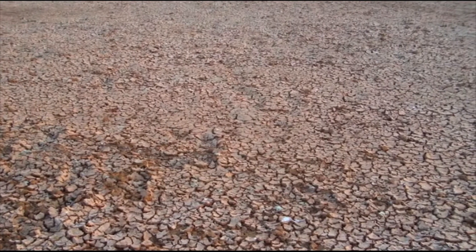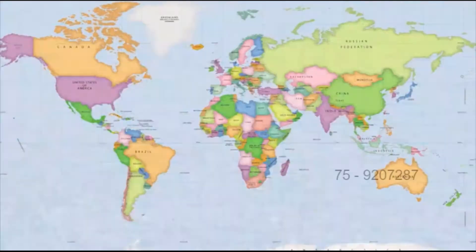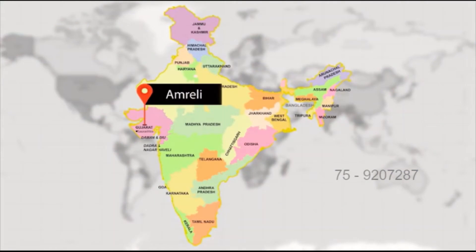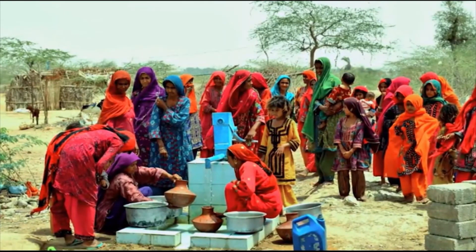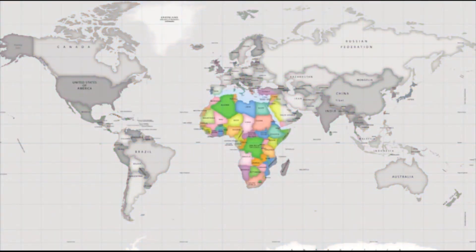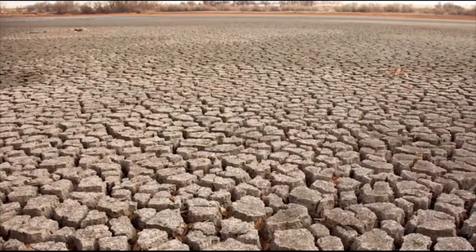In some areas of the world there is such an acute shortage of water that people have to buy water to survive. For example, Amrelly city in Saurashtra, India, actually has a water market where people buy water from neighboring villages. Most of Africa suffers from water shortage. Other areas include West and South Asia, parts of western USA, northwest Mexico, parts of South America, and all of Australia.